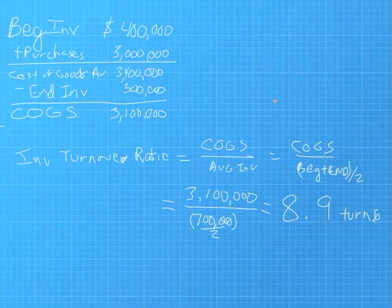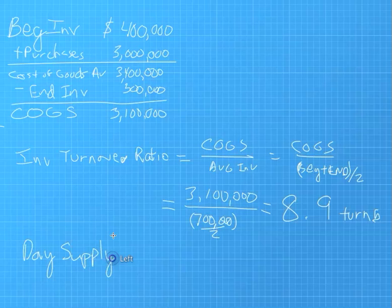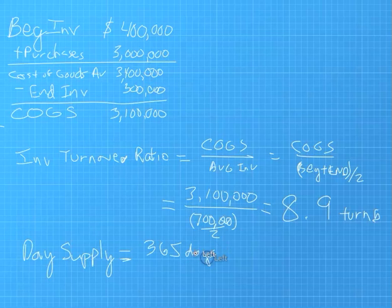Now, we can take that turnover ratio and calculate another ratio that we refer to as like day supply or the days of inventory on hand. And your day supply calculation is simply just you take the number of days in a year, 365, so 365 days.